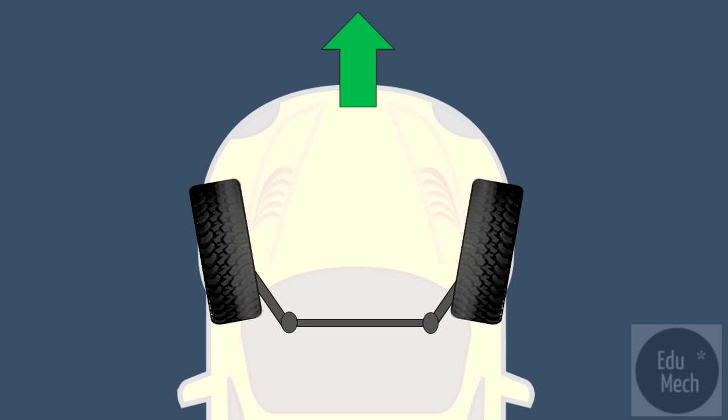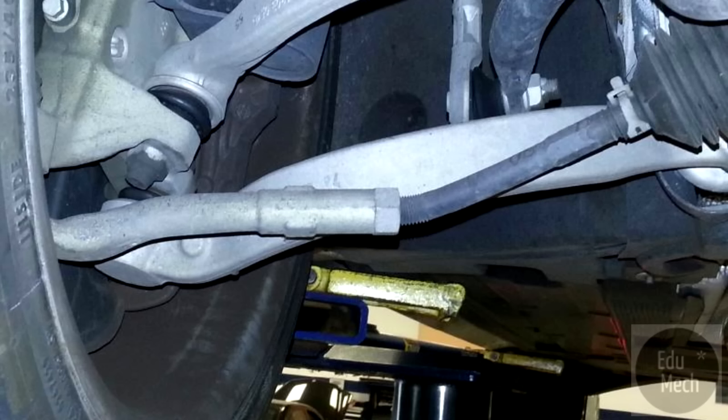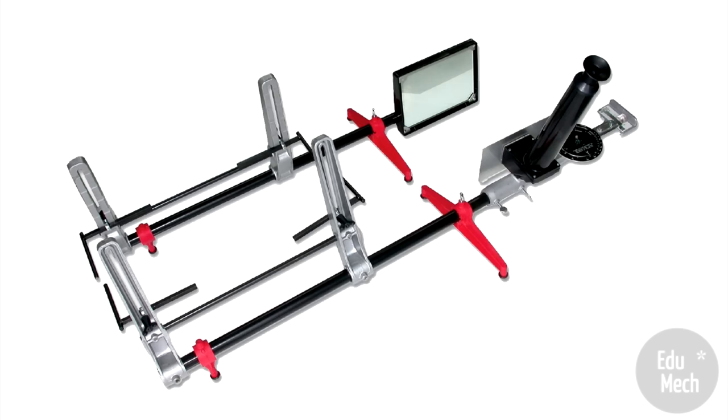Wheel alignment can be affected by many things, including worn steering and suspension ball joints and bushes, curbing and other road condition-related damage. When track rod end ball joints are replaced, the wheel alignment must be checked and adjusted if necessary.